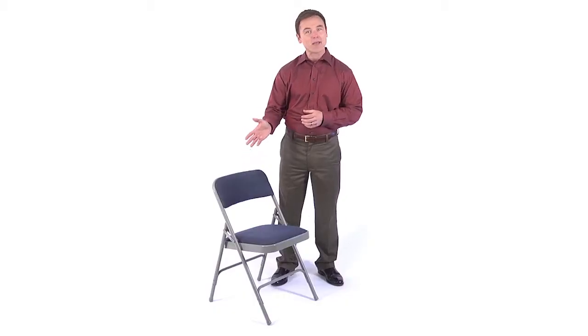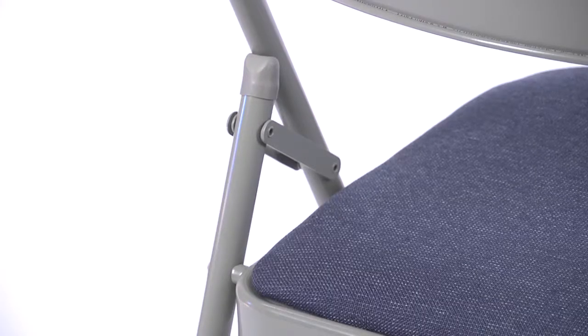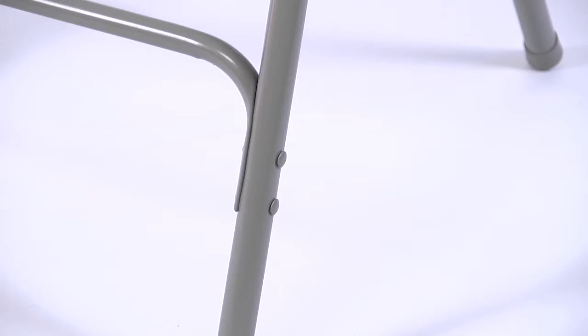Our frames are made from heavy-duty steel and feature double hinges on both sides of the chair, plus double riveted U-braces between the front legs and between the back legs for added strength and durability.